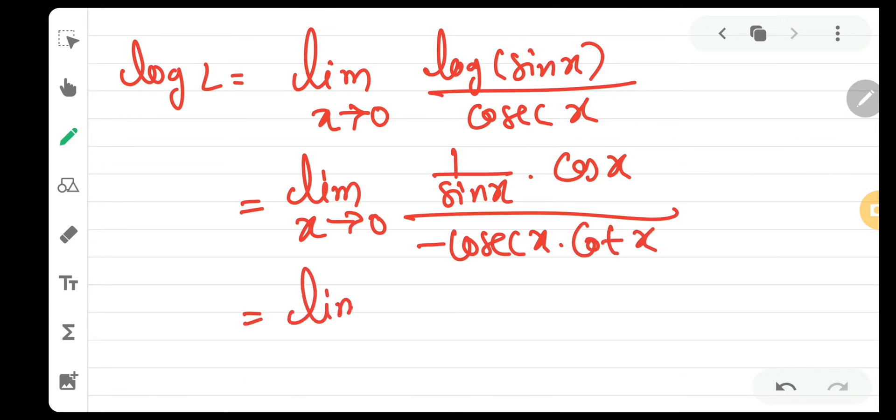As you can see, we have limit x tends to 0 and in the numerator we have cot x and in the denominator we have minus cosec x dot cot x. So, cot x and cot x got cancelled. And we have log l.